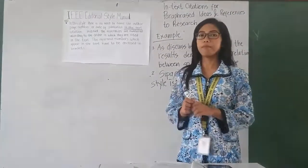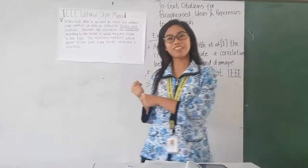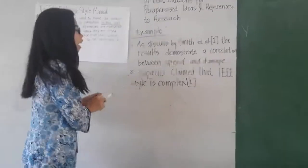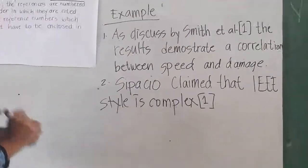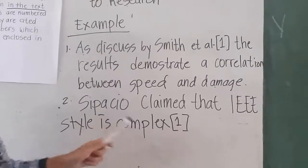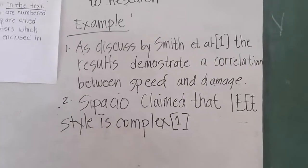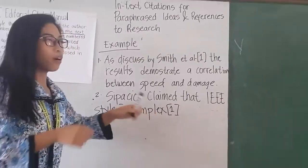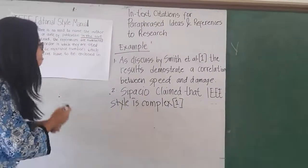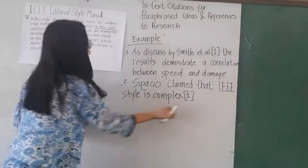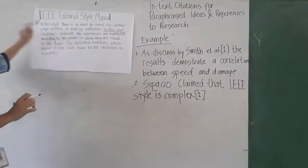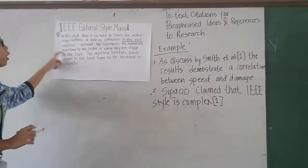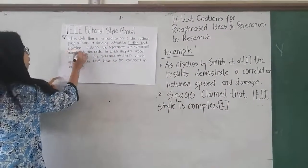Here are some examples of the IEEE manual style. In the in-text citation, this is the basic example: 'Sebastian claims that the IEEE style is complex,' and at the end of the text we see a bracket with the number one because this is the in-text citation. As stated, we exclude the name of the author, page number, or date of publication from the in-text citation.